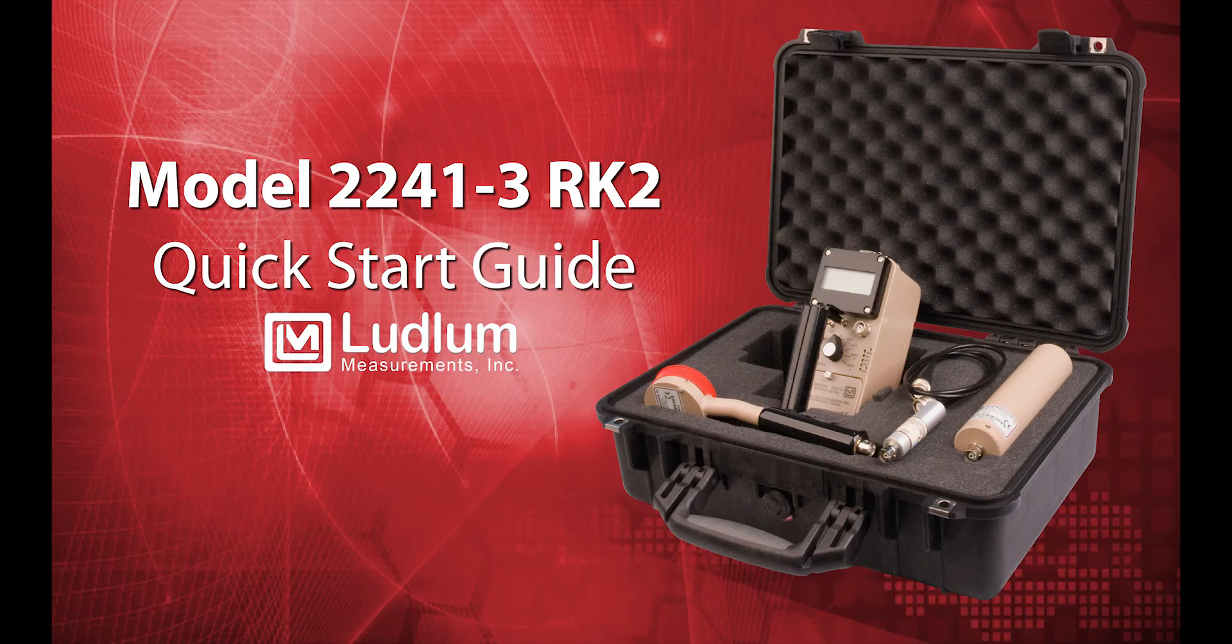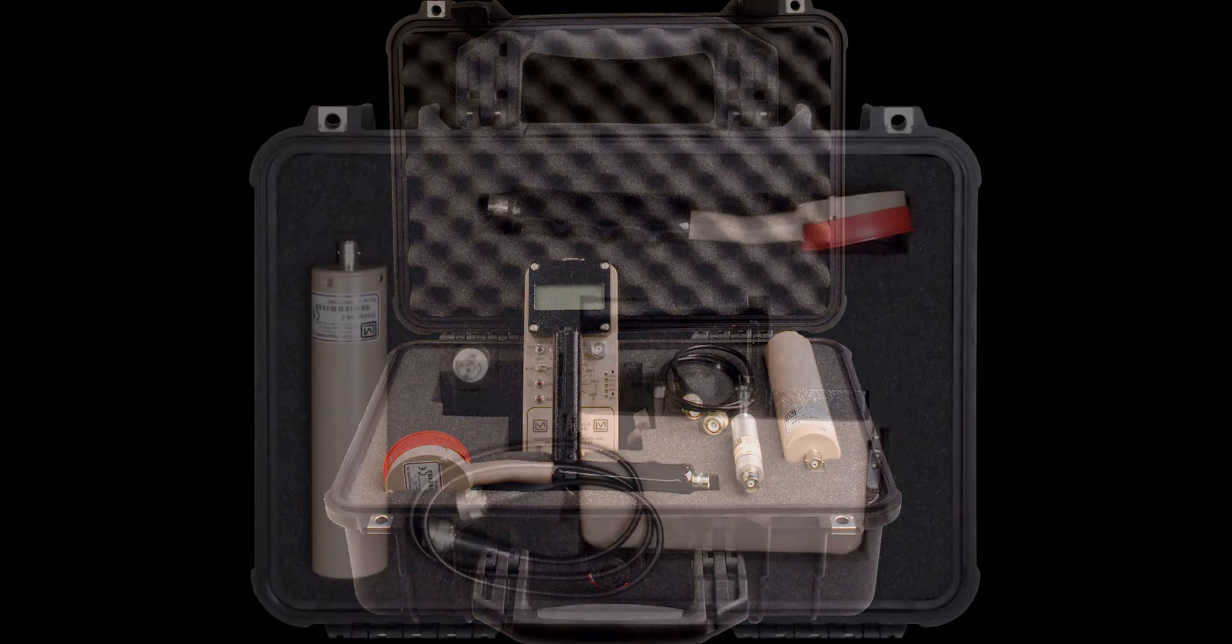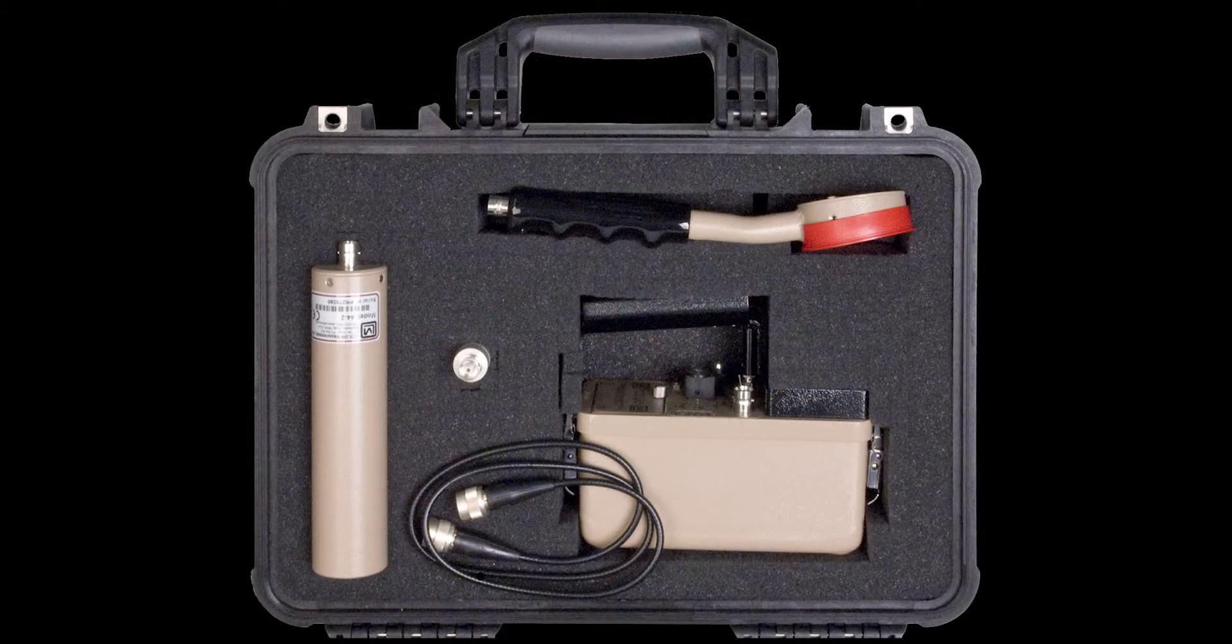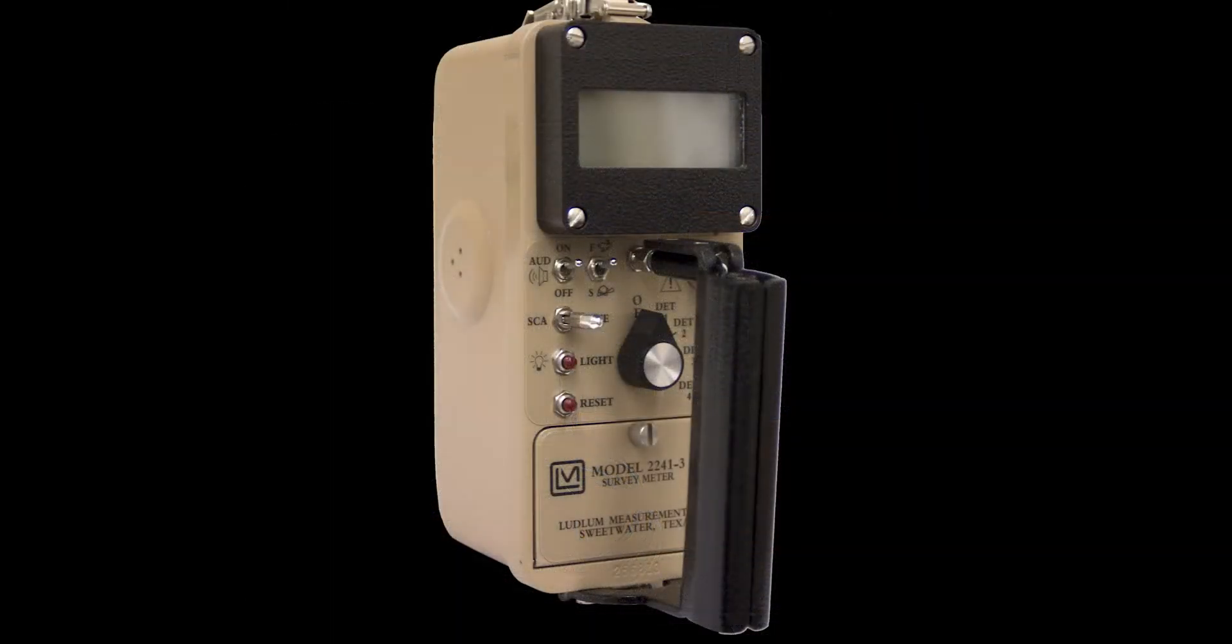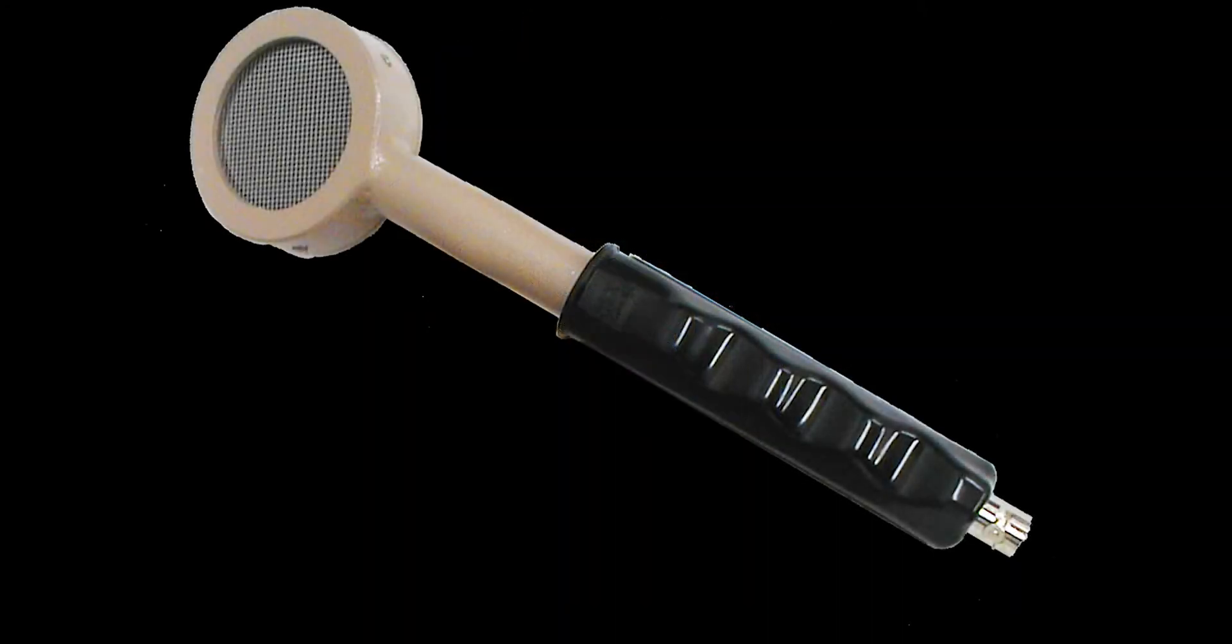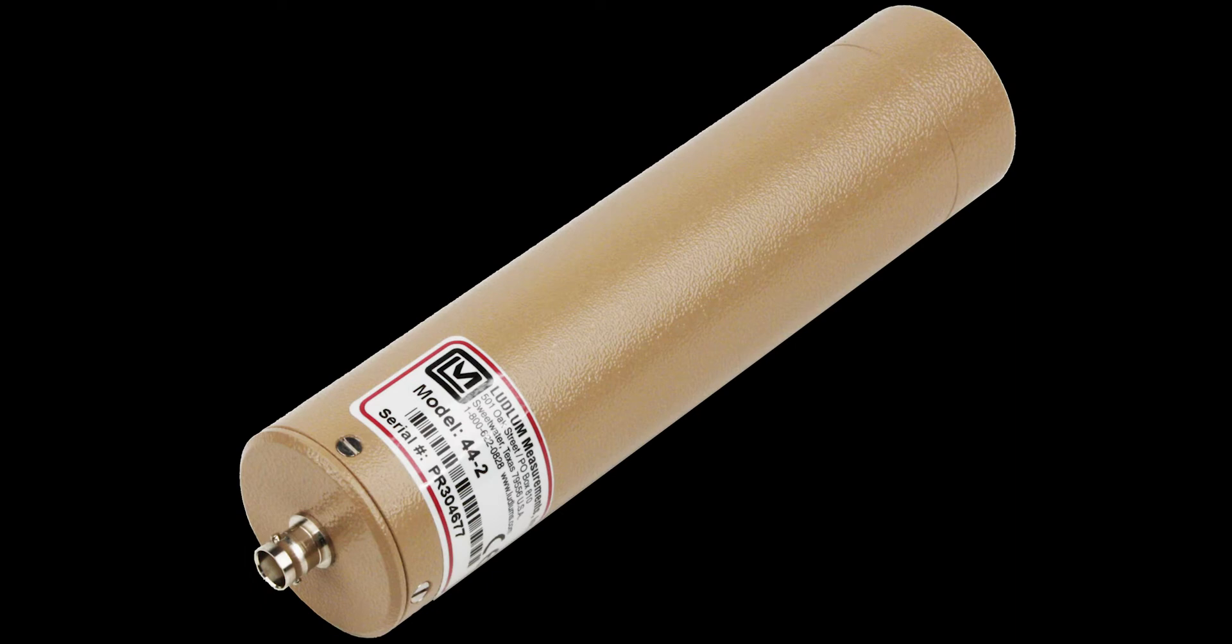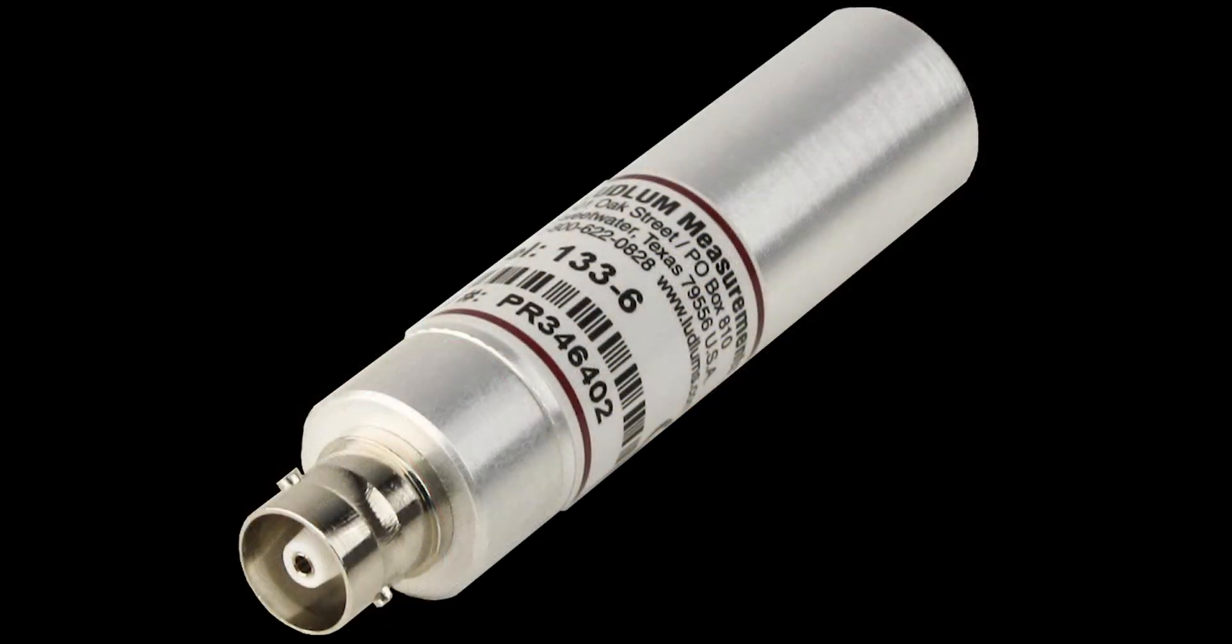The Model 2241-3RK2 response kit comes in a rugged, waterproof carrying case. It features the Model 2241-3 digital meter, a 44-9 pancake type GM detector, a Model 44-2 gamma scintillator, and a Model 133-6 high range gamma detector.